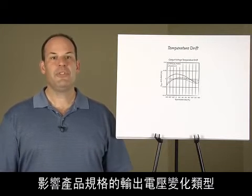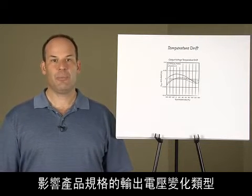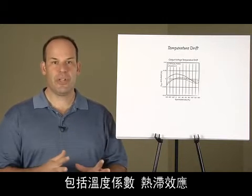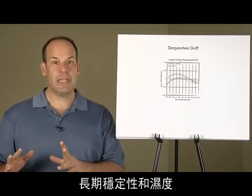The types of change in output voltage that affect product specifications include temperature coefficient, thermal hysteresis, long-term stability, and humidity.